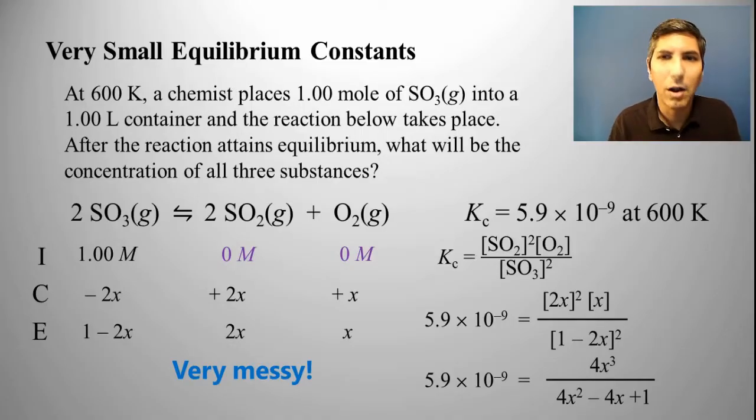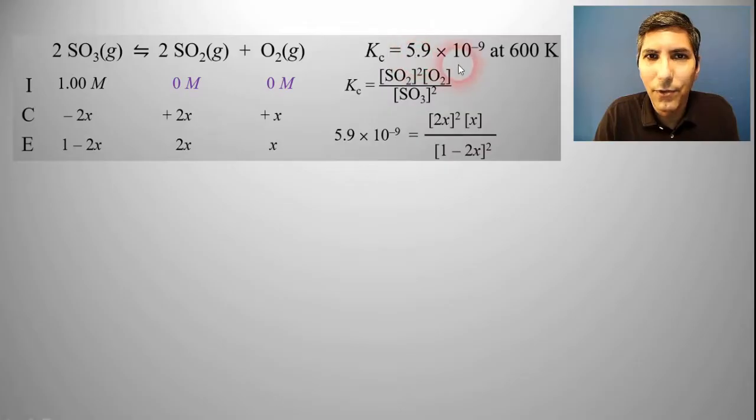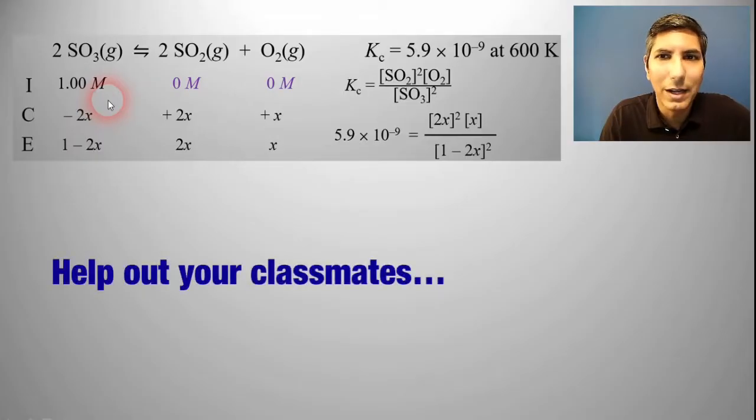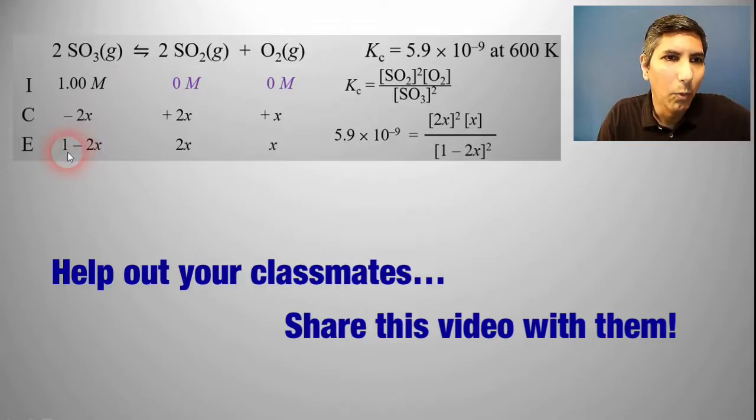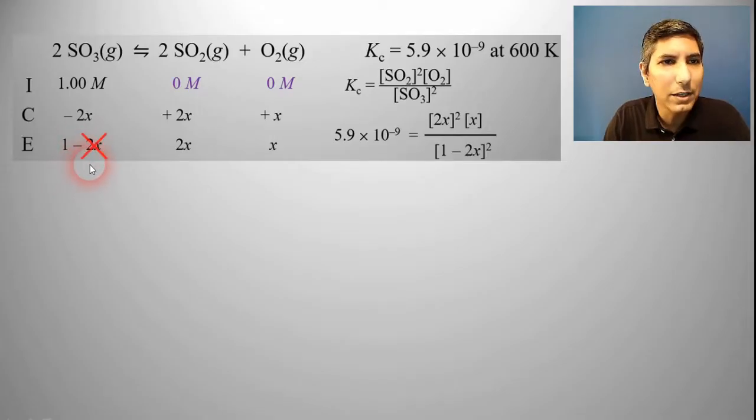In chemistry, we have a rule called the 5% rule. At this point, you will realize that since this equilibrium constant is a very small number, 10 to the minus 9th, a very small number, that means that almost none of this one molar sulfur trioxide is going to react. That means that 1 minus 2X is very close to 1. Because of that, I think it's safe for me to just ignore this minus 2X right here. We can work the problem without that subtracted term, and we should get an answer that is extremely close to the real answer.